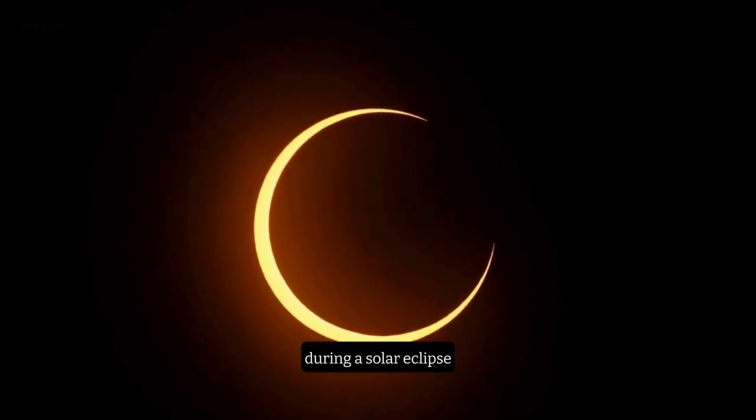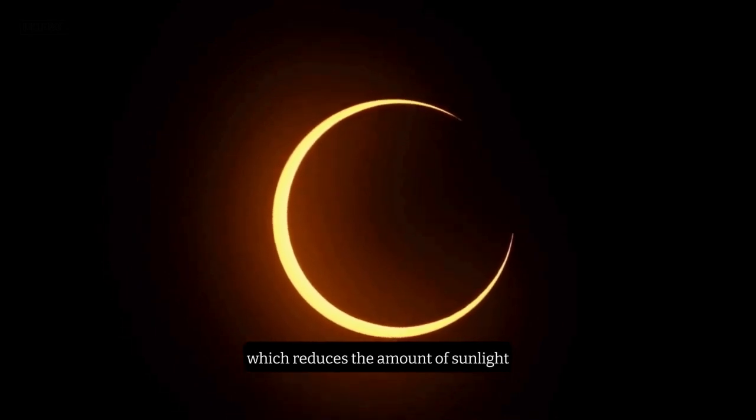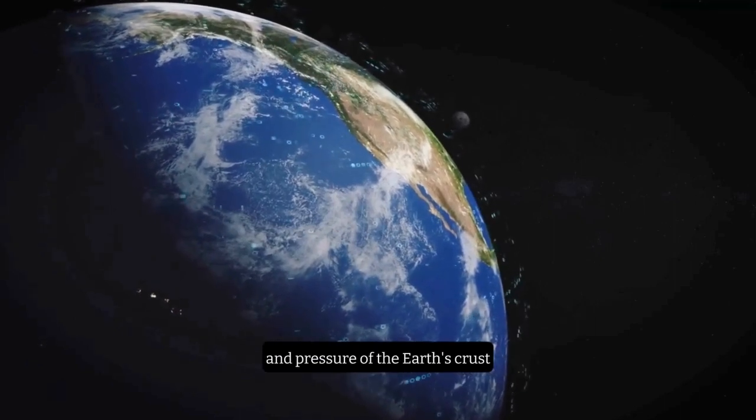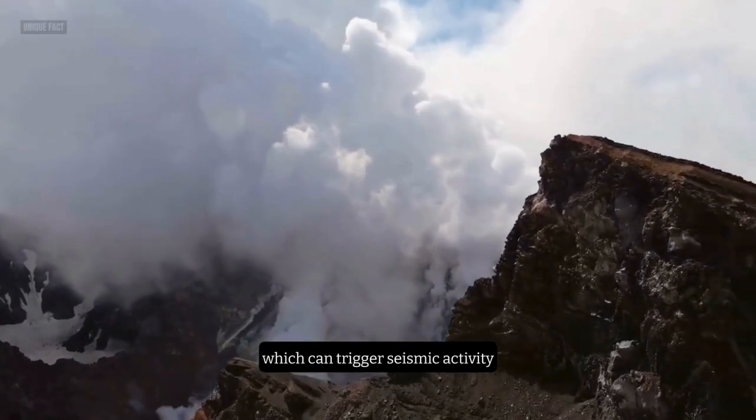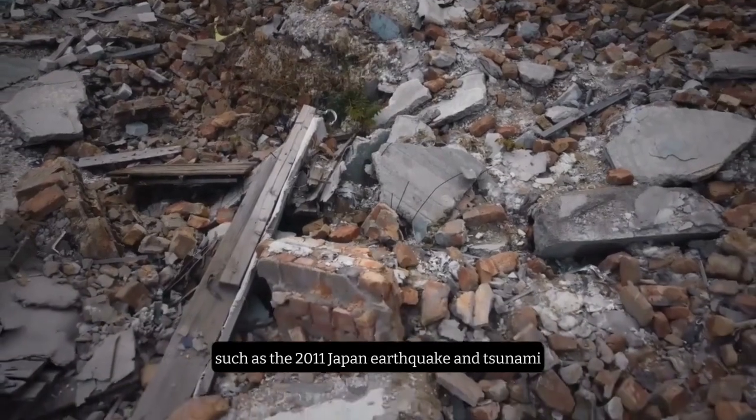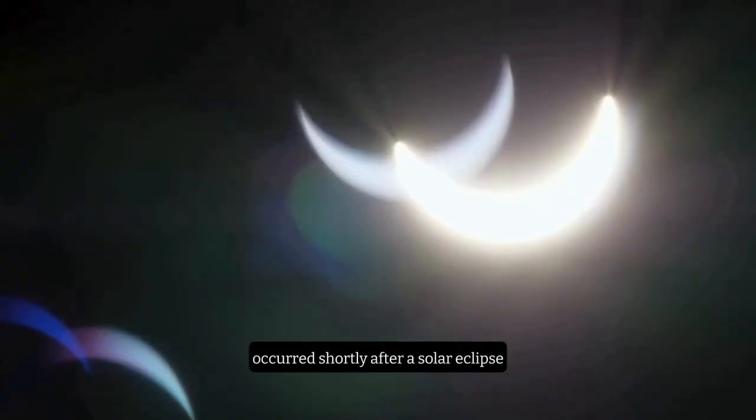During a solar eclipse, the moon casts a shadow on the Earth, which reduces the amount of sunlight and heat reaching the surface. This causes a slight change in the temperature and pressure of the Earth's crust, which can trigger seismic activity. Scientists have found that some major earthquakes, such as the 2011 Japan earthquake and tsunami, occurred shortly after a solar eclipse.